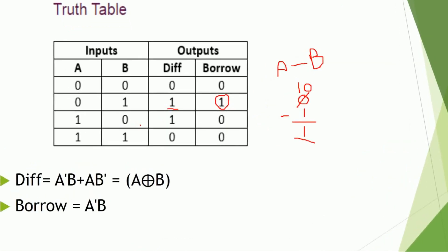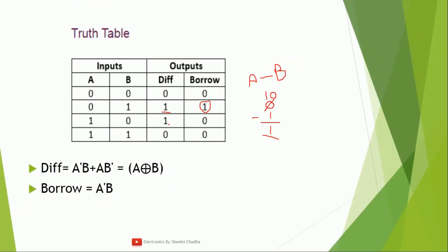Next is one minus zero — it's very simple: one minus zero equals difference one, borrow zero. Finally, one minus one: one minus one is zero, difference zero, borrow zero. This was the truth table for the half subtractor.